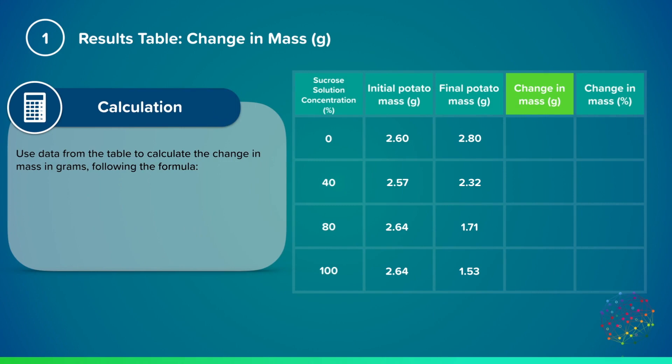To calculate the change in mass that occurred after the potato chips were left in different solutions, you need to do the final mass minus the initial mass. The data here shows for a 0% concentration, this would be a final mass of 2.80 grams minus the initial mass 2.60 grams, equals a change in mass of 0.20 grams.